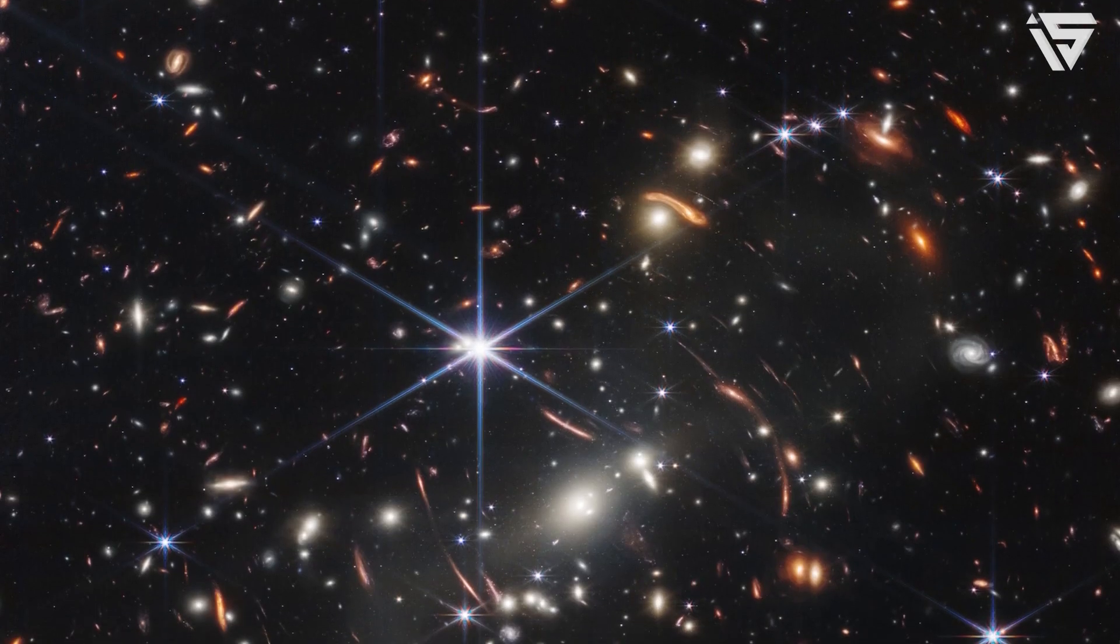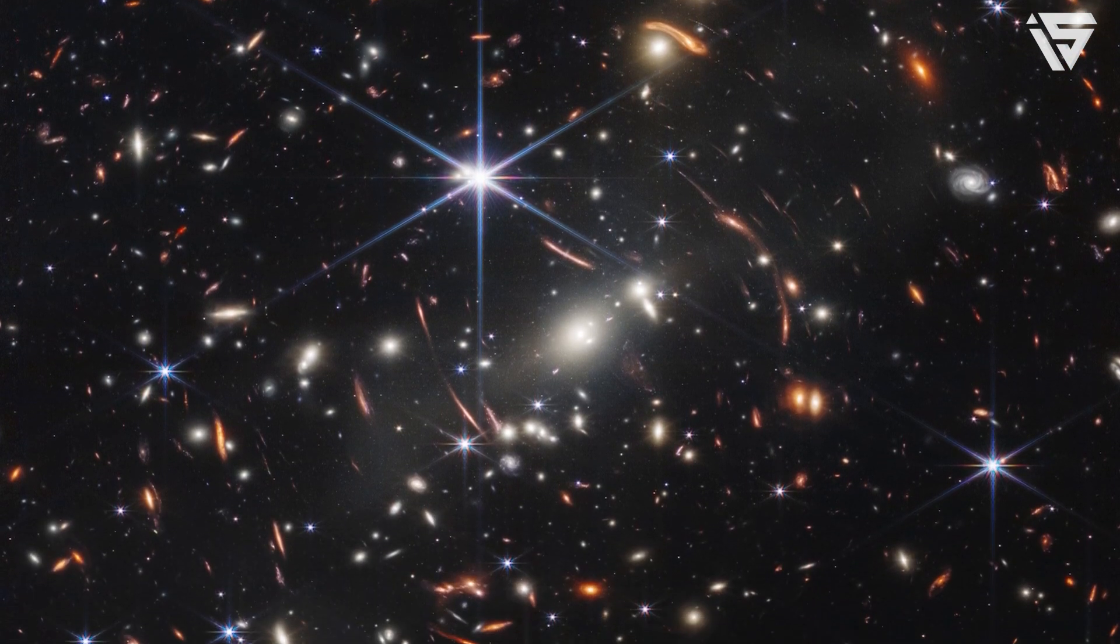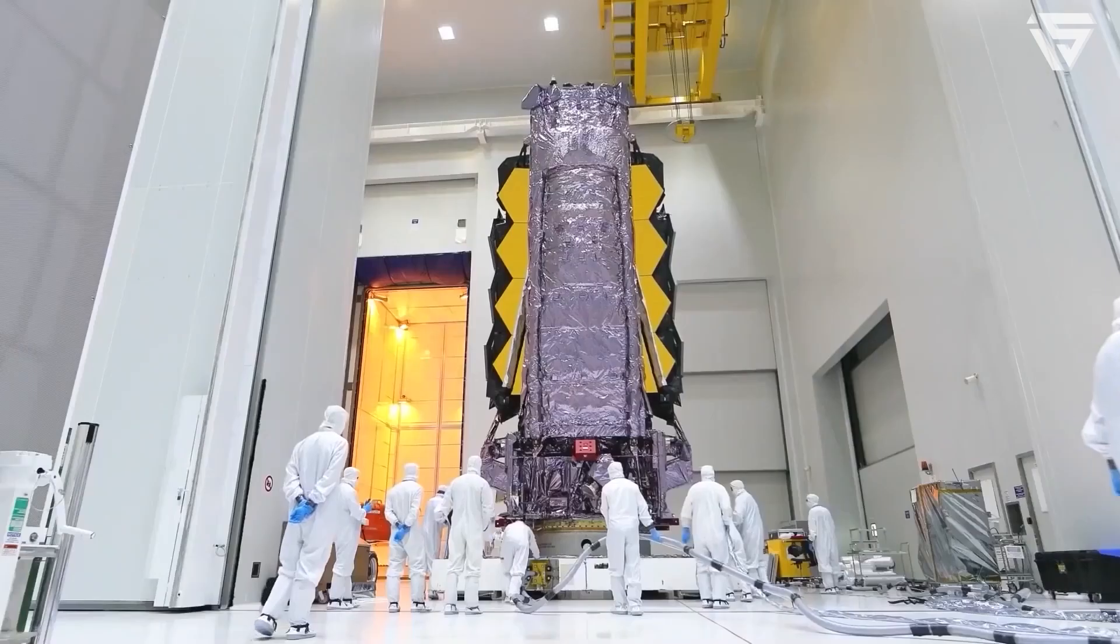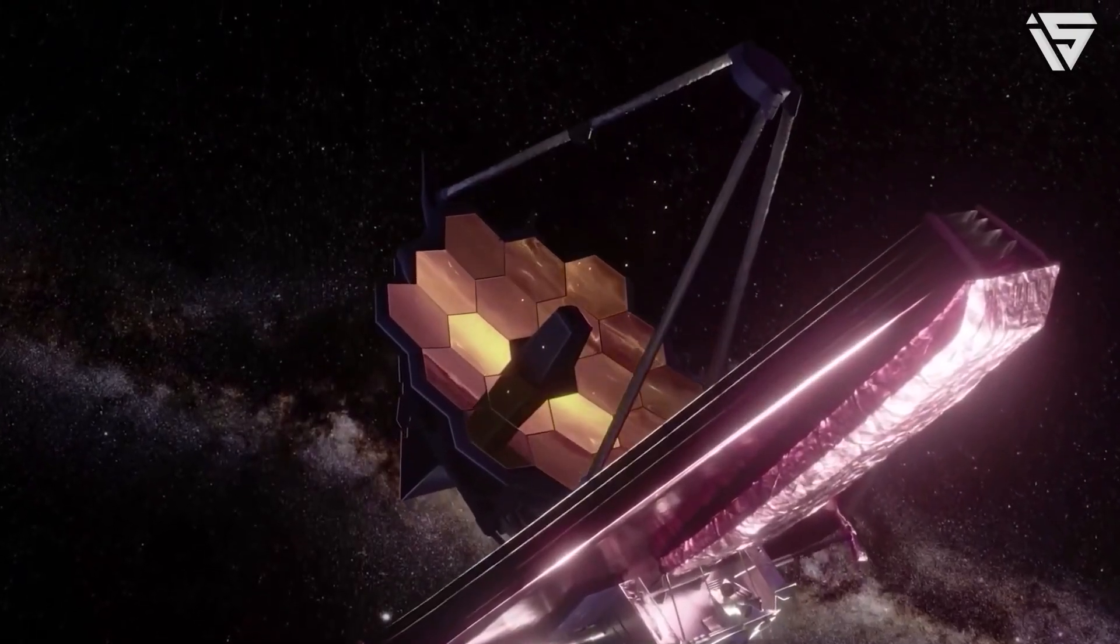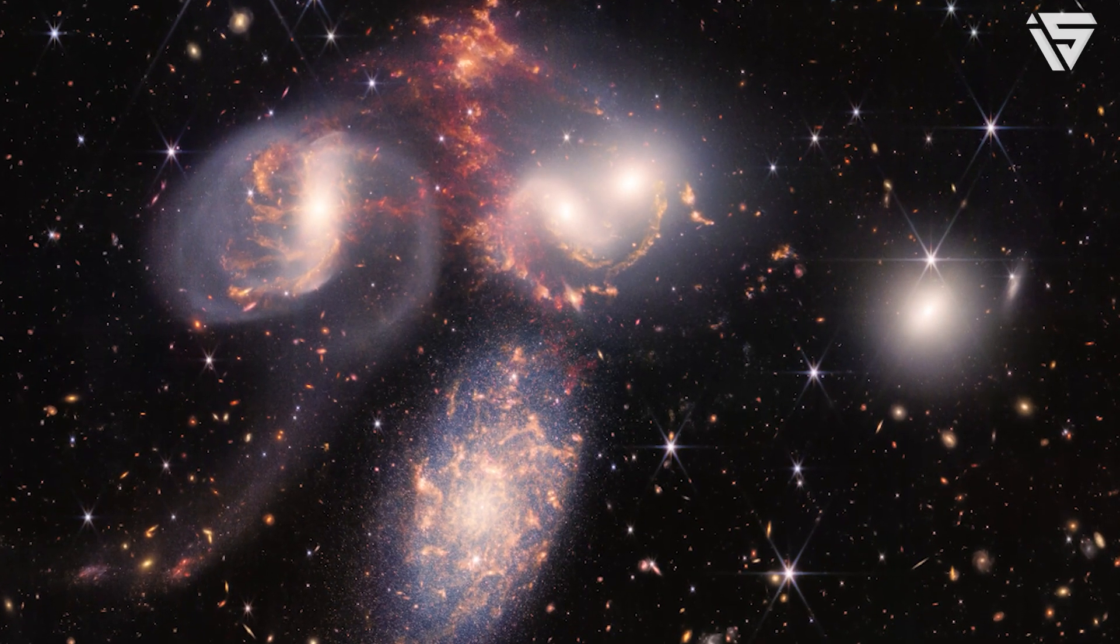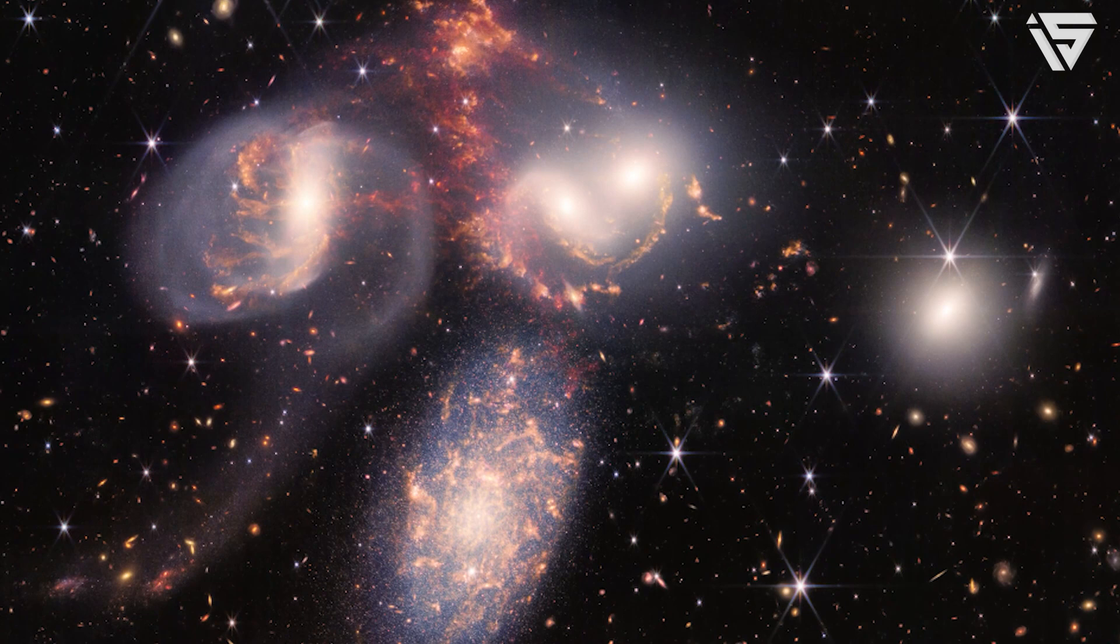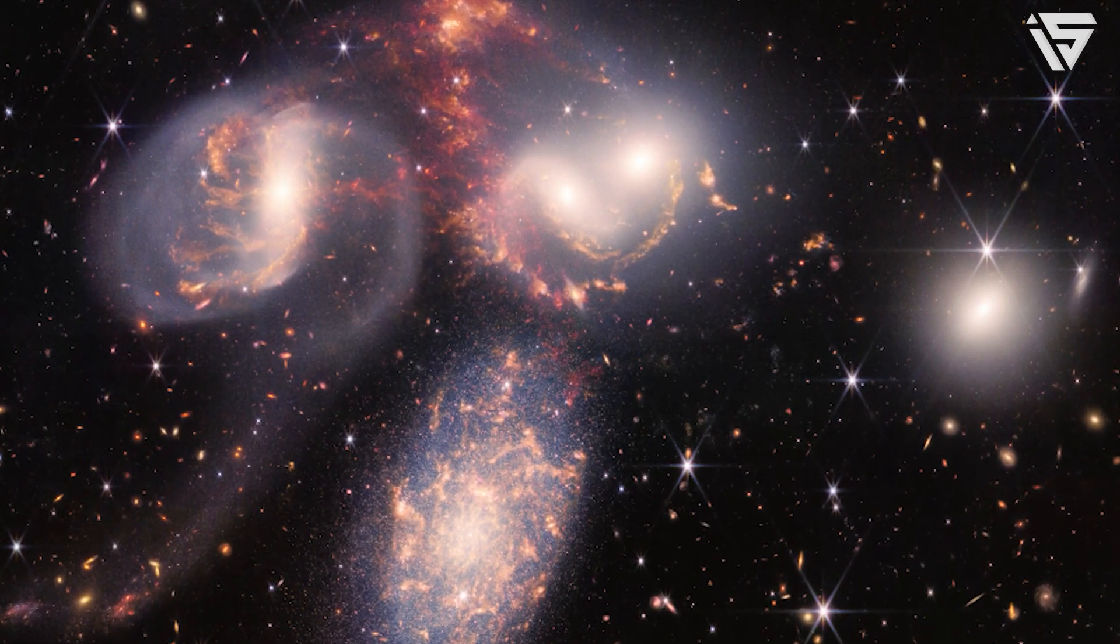These galaxies were extremely bright and had a stellar mass which was several billion solar masses. The problem was that the more the scientists discovered, the more perplexing things turned out to be. The giant, complex galaxies which were discovered went against the expectations that were set by the standard model of the evolution of the universe.